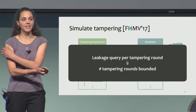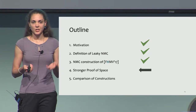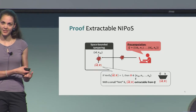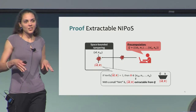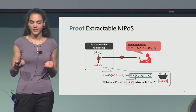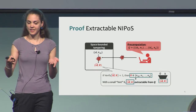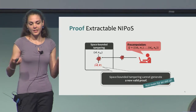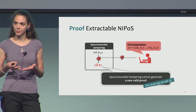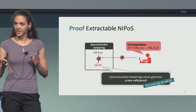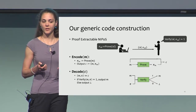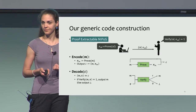Can we do better? The answer is yes, and it lies in a stronger proof of space. In our paper, we define a notion of proof extractability. As the name suggests, we don't want to extract only the identity but also a proof. Instead of extracting only the identity id-tilde, we also want pi-tilde. Or put differently, we want to say that a space-bounded algorithm cannot generate a new valid proof — not even for old identities. The code construction is exactly the same as in the prior work, but we use a proof-extractable non-interactive proof of space.